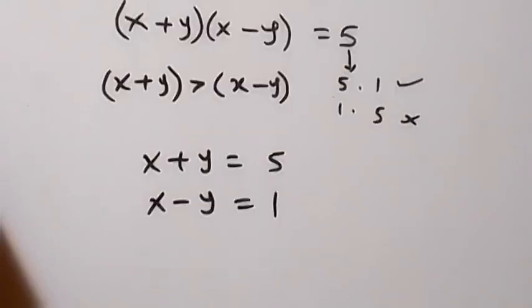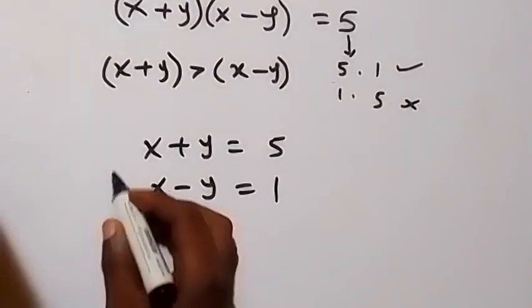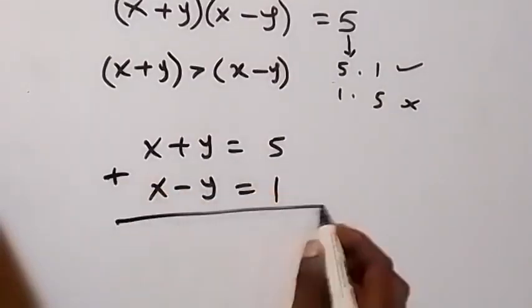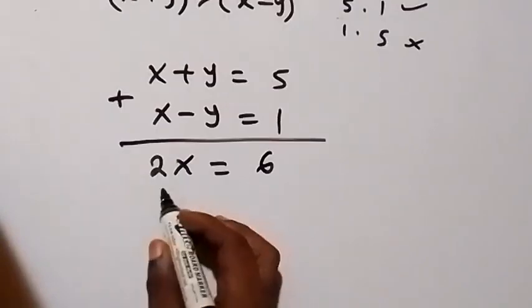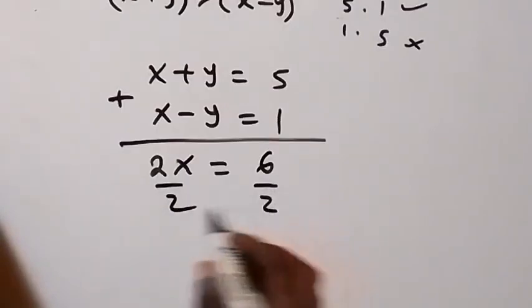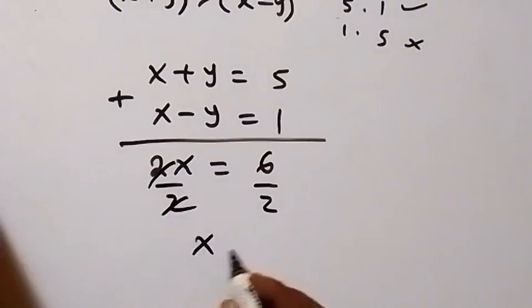So when we solve these two equations simultaneously, we can add to eliminate y. And this will give us 2x equals to here 5 plus 1, that's 6. Then we divide both sides by 2 from here. Then we cancel out and x here equals 3.